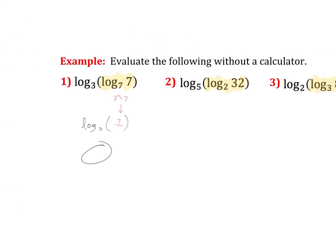Number two, if we work from the inside out, let's see, 2 to what power is 32? Well, that would be 5. So I need what is log base 5 of 5. So 5 to what power is 5? Well, that's just 1. 5 to the 1st is 5.